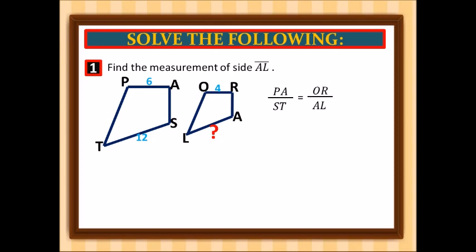Next, we are going to substitute the values from our given. PA is equal to 6, ST is equal to 12, OR is equal to 4. We substitute only AL. Since we do not know the value of AL, we simply write AL.